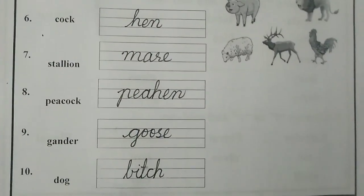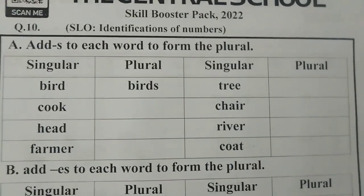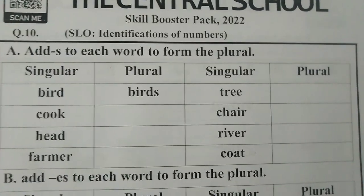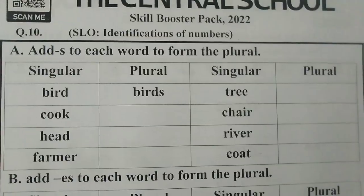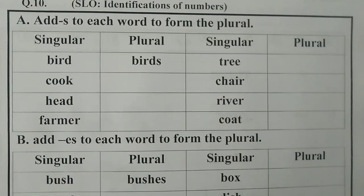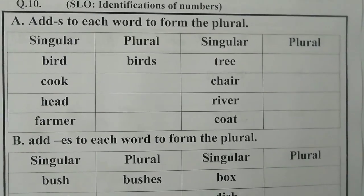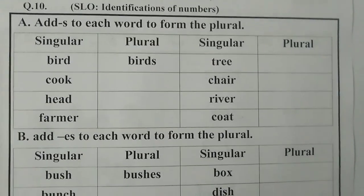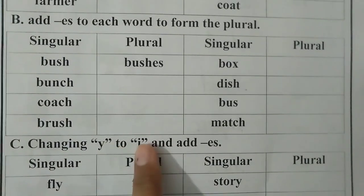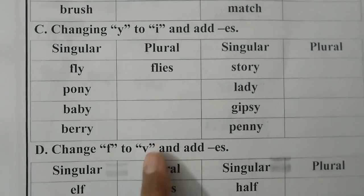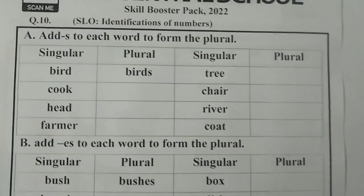Let's move to the next page — page number 16 and question number 10. Question number 10 is the identification of numbers. As we already have learned, words that refer to one thing are singular, and words that refer to more than one thing are plural. To make a plural form: we add S, or we add ES, or we remove Y and add IES, or we remove F and add VES. You have to learn all these rules.